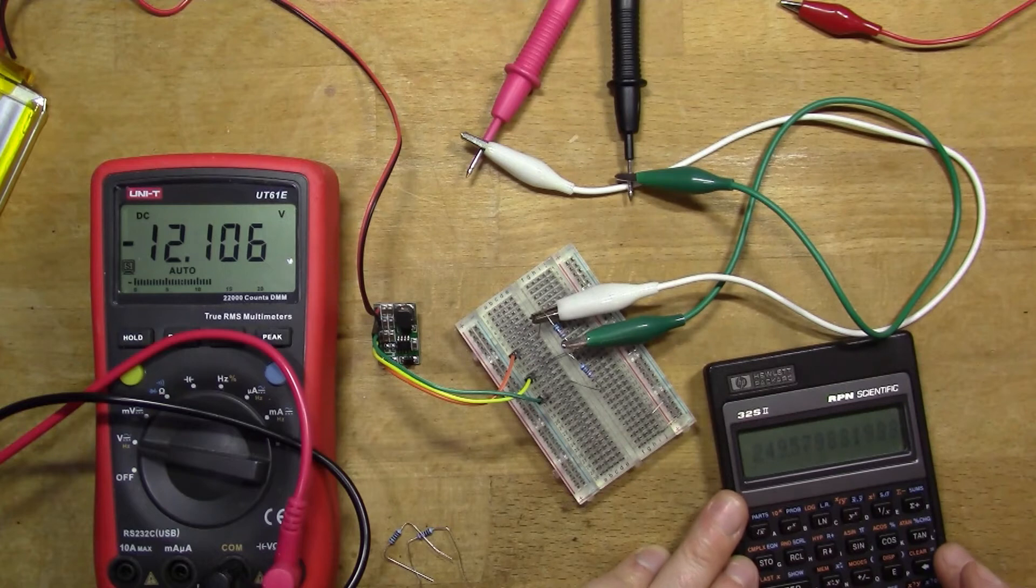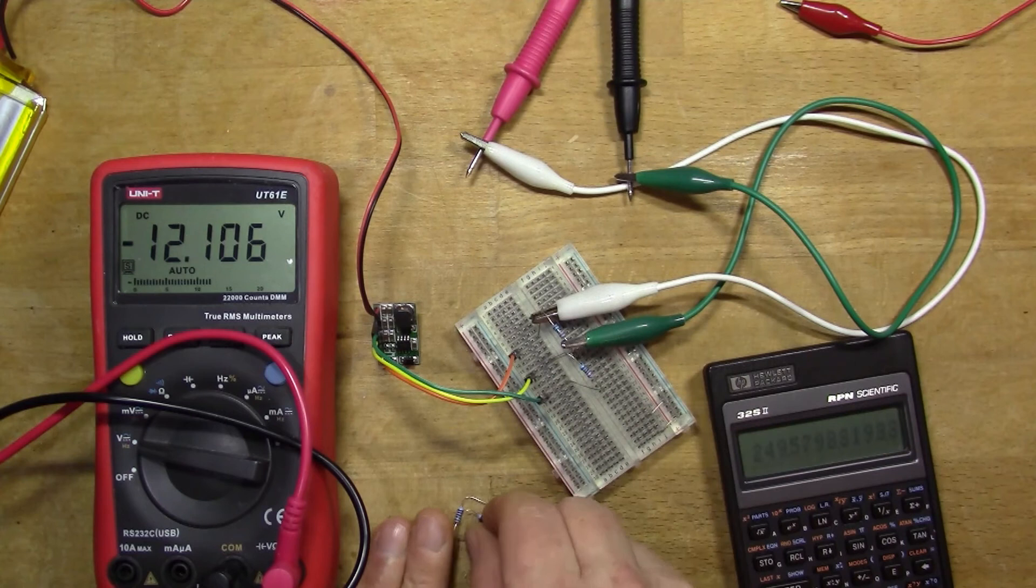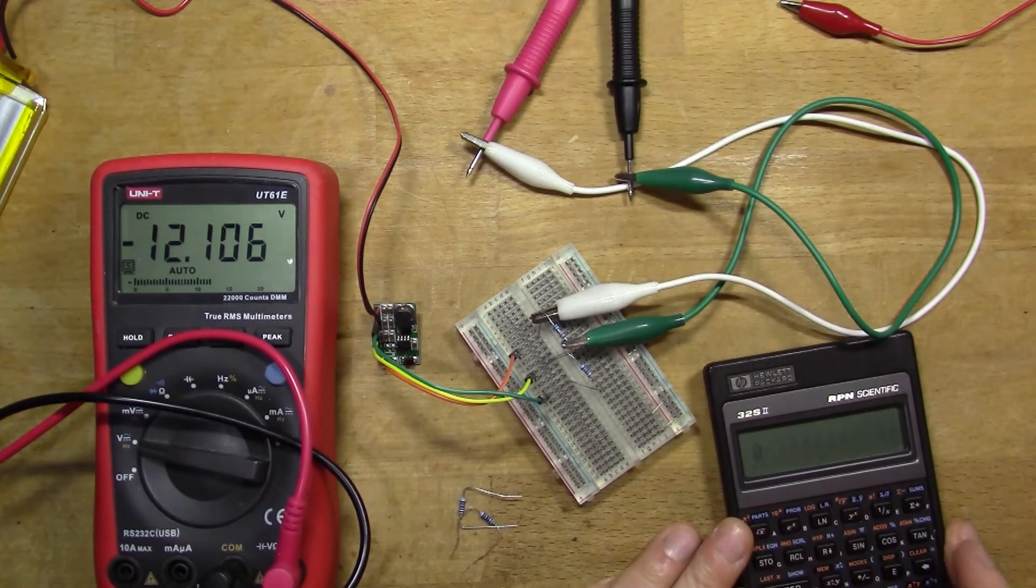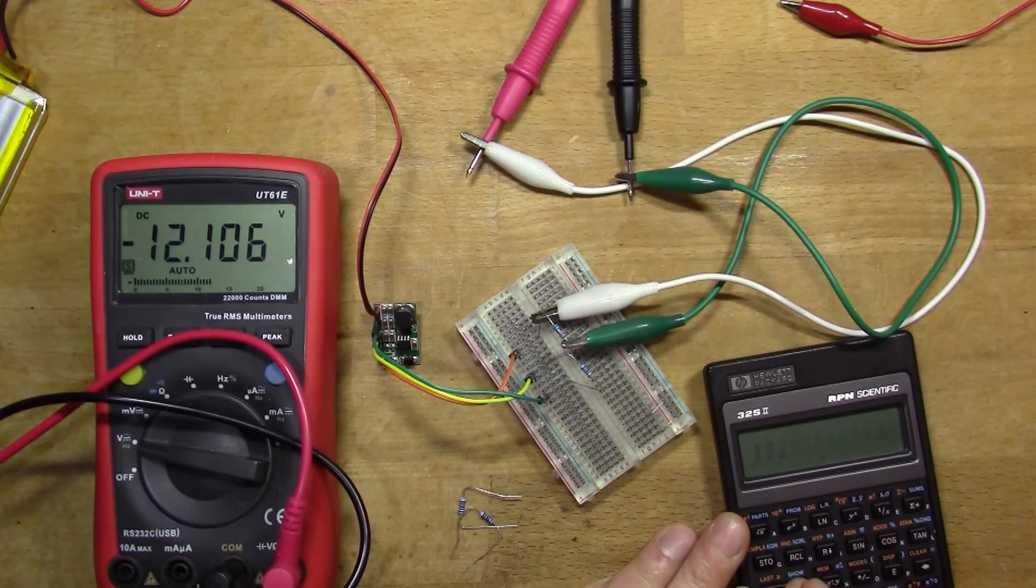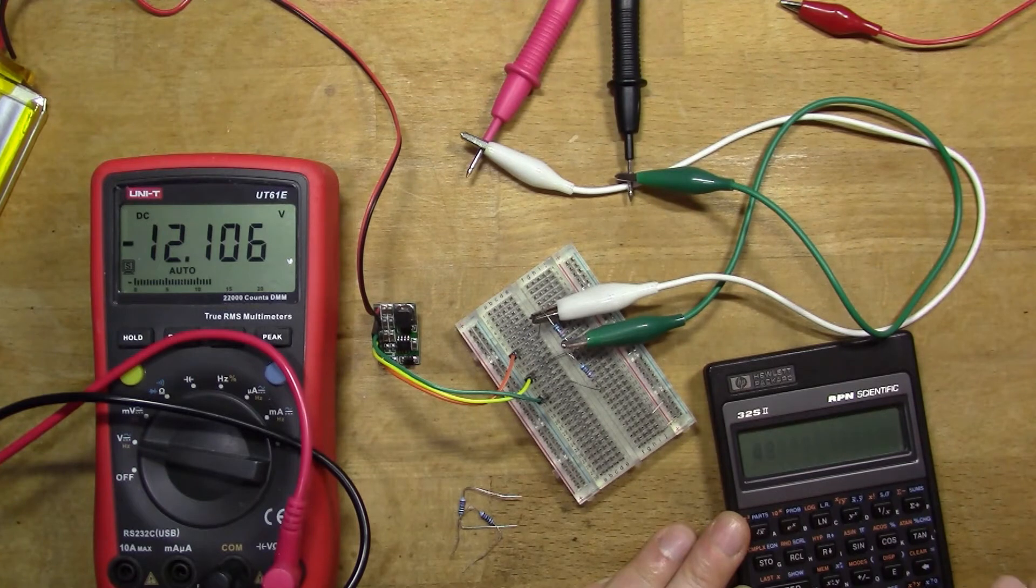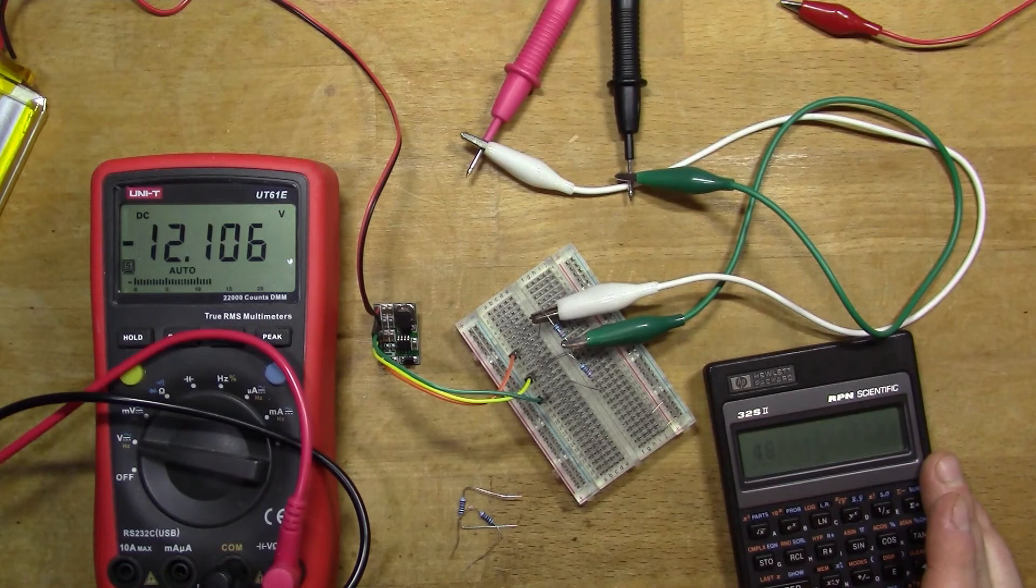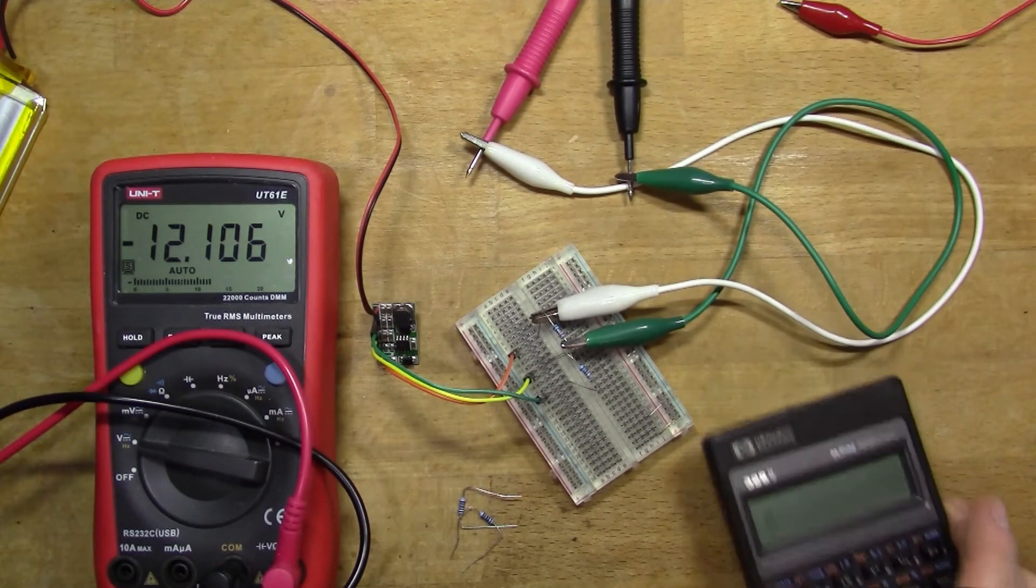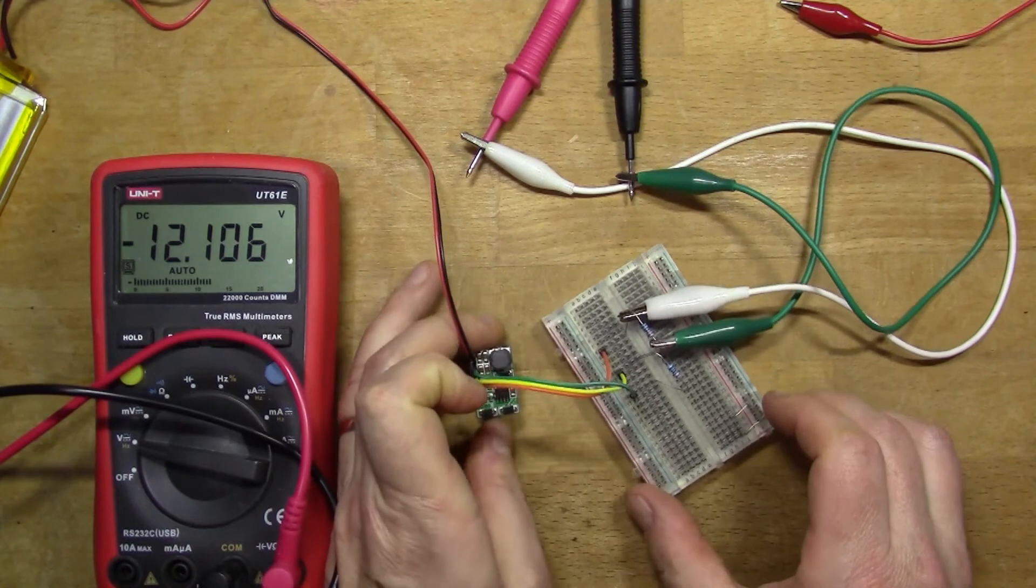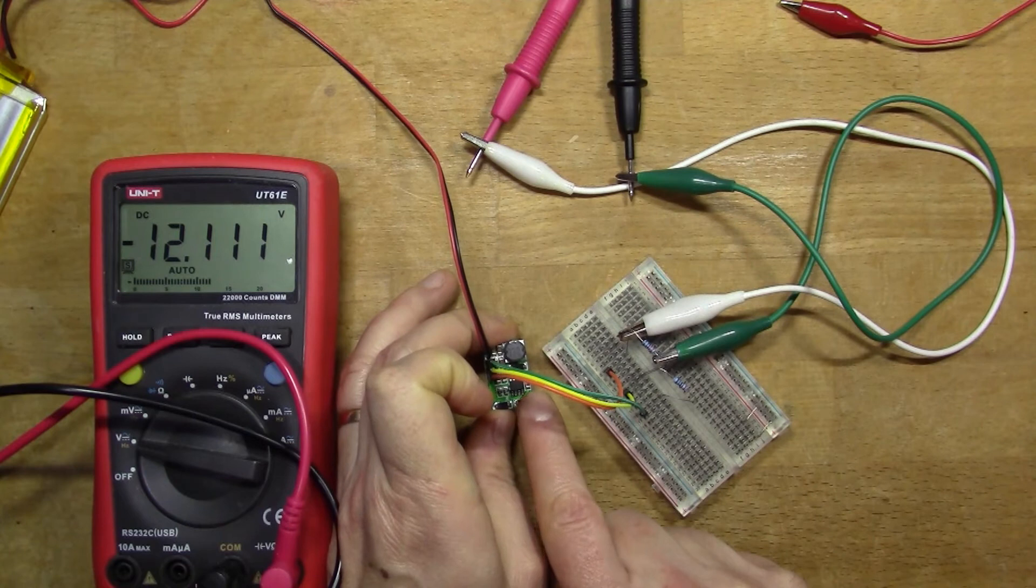So we've got 270 ohms in parallel with the 3300. If we do that sum, 3300 times 270 divided by the sum of the two, we get approximately 250 ohms. Then if we divide 12 by 0.25k, that gives us 48 milliamps.